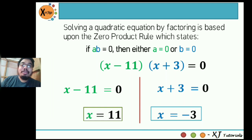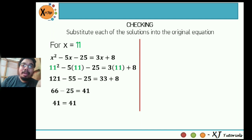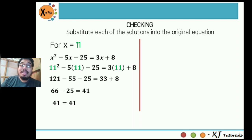Let's check by substituting into the original equation x² - 5x - 25 = 3x + 8. For x = 11: 11² - 5(11) - 25 = 3(11) + 8 → 121 - 55 - 25 = 33 + 8 → 66 - 25 = 41 → 41 = 41. Therefore, x = 11 is a solution and one of the roots of the equation.